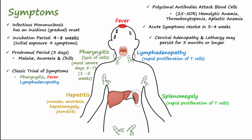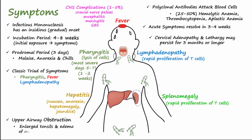Neurological complications occur in one to five percent of patients and include cranial nerve palsies, meningoencephalitis, transverse myelitis, optic neuritis, peripheral neuritis, cerebellitis, and Guillain-Barré syndrome. Upper airway obstruction due to enlarged tonsils and edema of mucous membranes occurs in one percent of cases, as does splenic rupture.